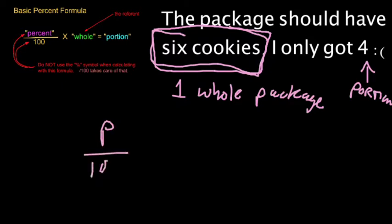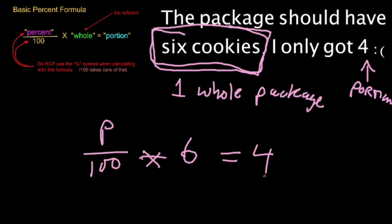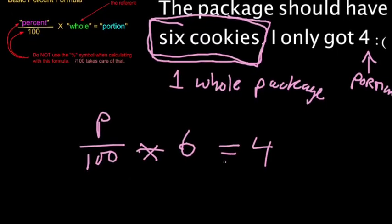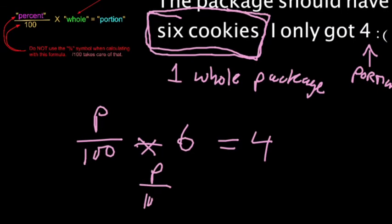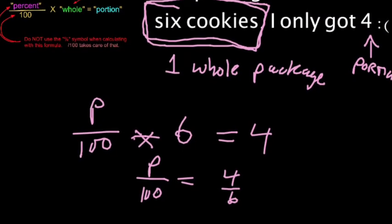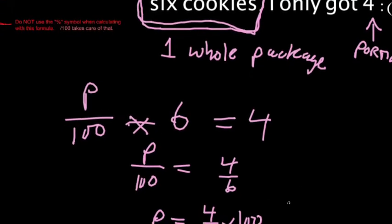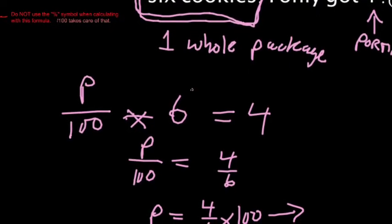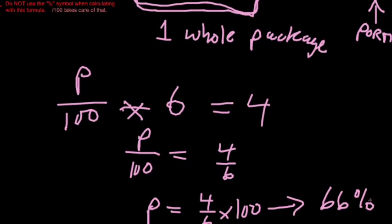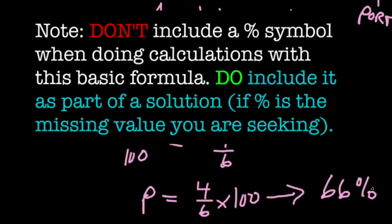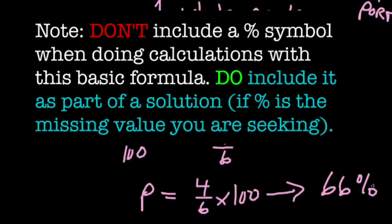Percent divided by 100 times 6, that's my whole, equals 4. That looks like an algebra problem that you have dealt with in algebra class. We've got to get rid of the 6 and the 100. I'm going to divide by 6 on both sides. We'll have P over 100 equals 4 over 6. I'm going to multiply by 100 on both sides. We're going to have P equals 4 over 6 times 100. In a calculator, all of that will go to 66% approximately. I only got 66% of my package, less than 75%, less than three quarters of what I was supposed to get. That's the deal with my sad face.